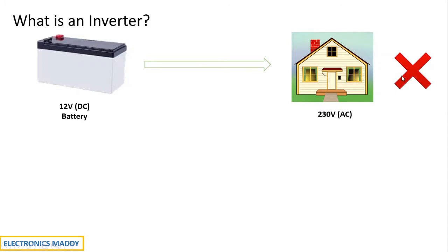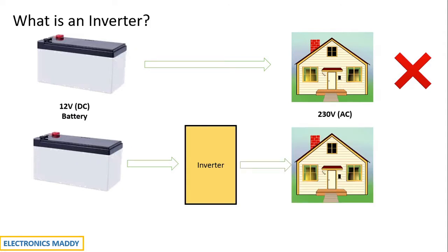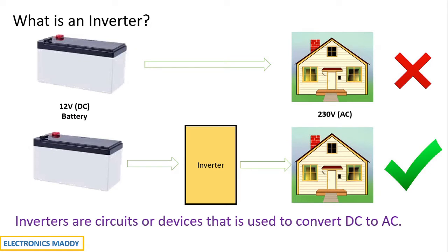So now directly giving 12V to 230V AC loads is not possible. So how do we convert this? We will be having a circuit which converts DC to AC and these are called inverters and I will be giving it to my household applications. And now it works because DC is converted to AC.